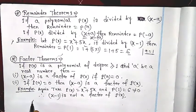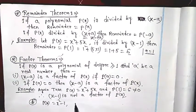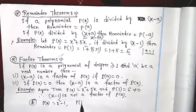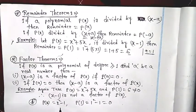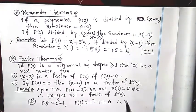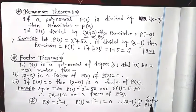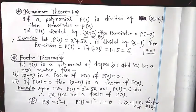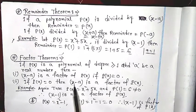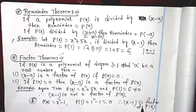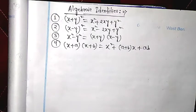Take another example: let p(x) = x² − 1. Then p(1) = 1² − 1 = 0. Therefore, (x − 1) is a factor of p(x) according to the Factor Theorem, because p(1) = 0.